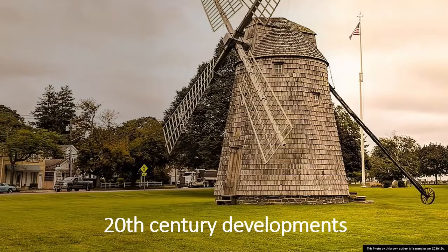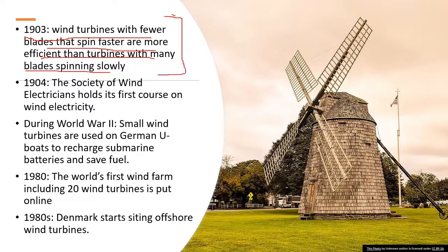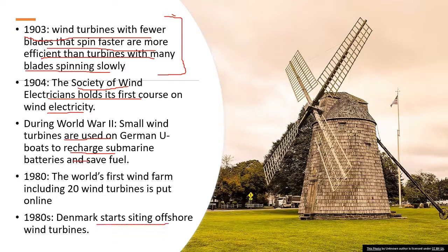Let's see 20th century wind energy development. In 1903, it was discovered that wind turbines with fewer blades spinning faster are more efficient than turbines with many blades spinning slowly. In 1904, the Society of Wind Electrification held its first course on wind electricity. During World War II, German wind turbines were used on U-boats to recharge submarine batteries to save fuel. In the 1980s, Denmark started siting the first offshore wind turbines.